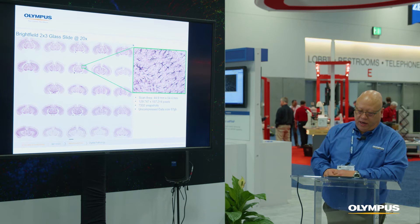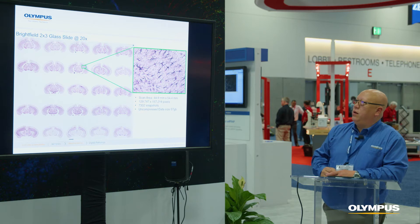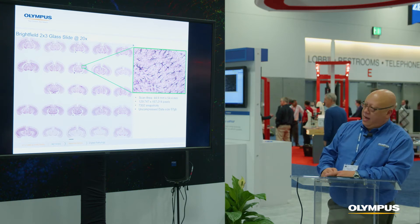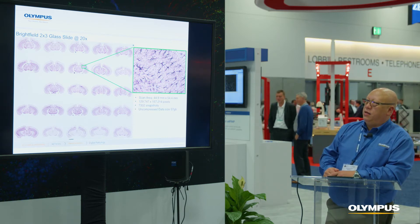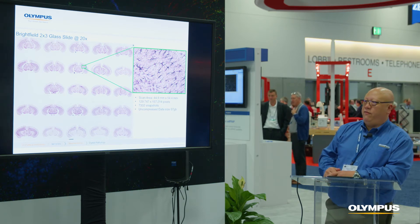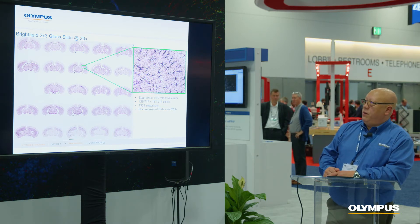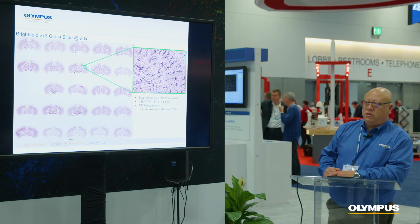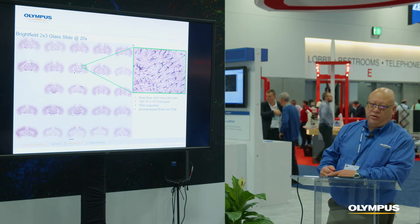In this example image, captured at 20x on a 2x3 slide, you can see the high-resolution zoom-in where you can see the astrocytes. The scan area is 44.9 millimeters by 54.4 millimeters, producing a 57 gigabyte image. These scanners can capture slides within 10 to 20 minutes for that size; a typical 15 by 15 area takes just several minutes per region of interest. This image is about 20 billion pixels — 129,000 by 157,000 pixels — giving you macro-to-micro imaging in the same image, delivering the resolution needed for your research.